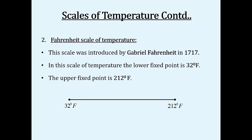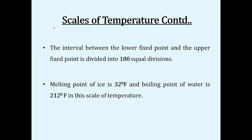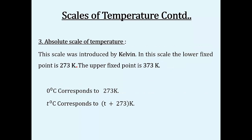The Fahrenheit scale was introduced by Gabriel Fahrenheit in the year 1717. The lower fixed point is 32°F and the upper fixed point is 212°F. This scale is divided into 180 equal divisions. The melting point of ice is 32°F and the boiling point of water is 212°F.